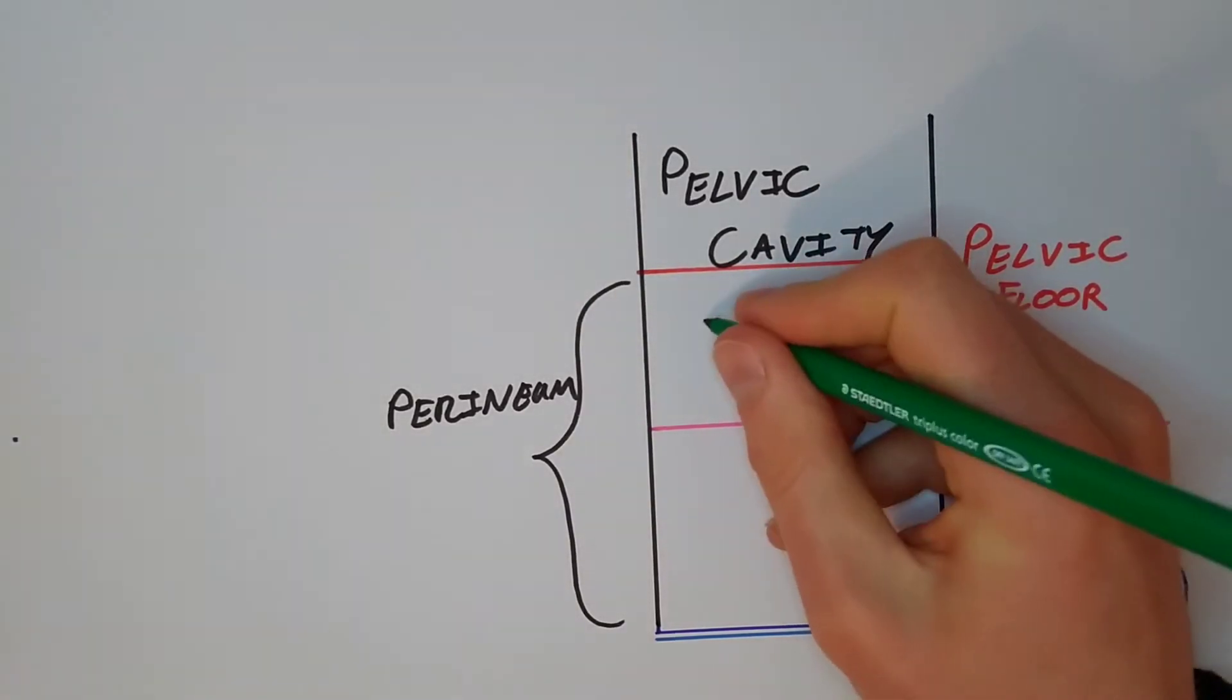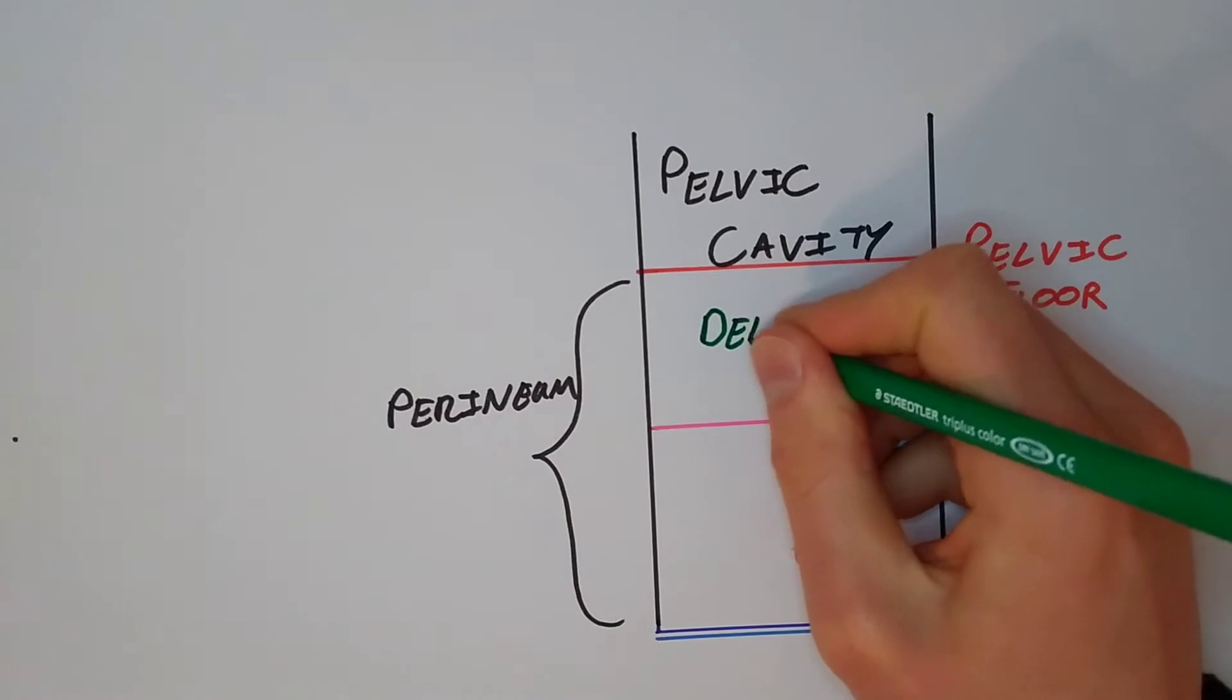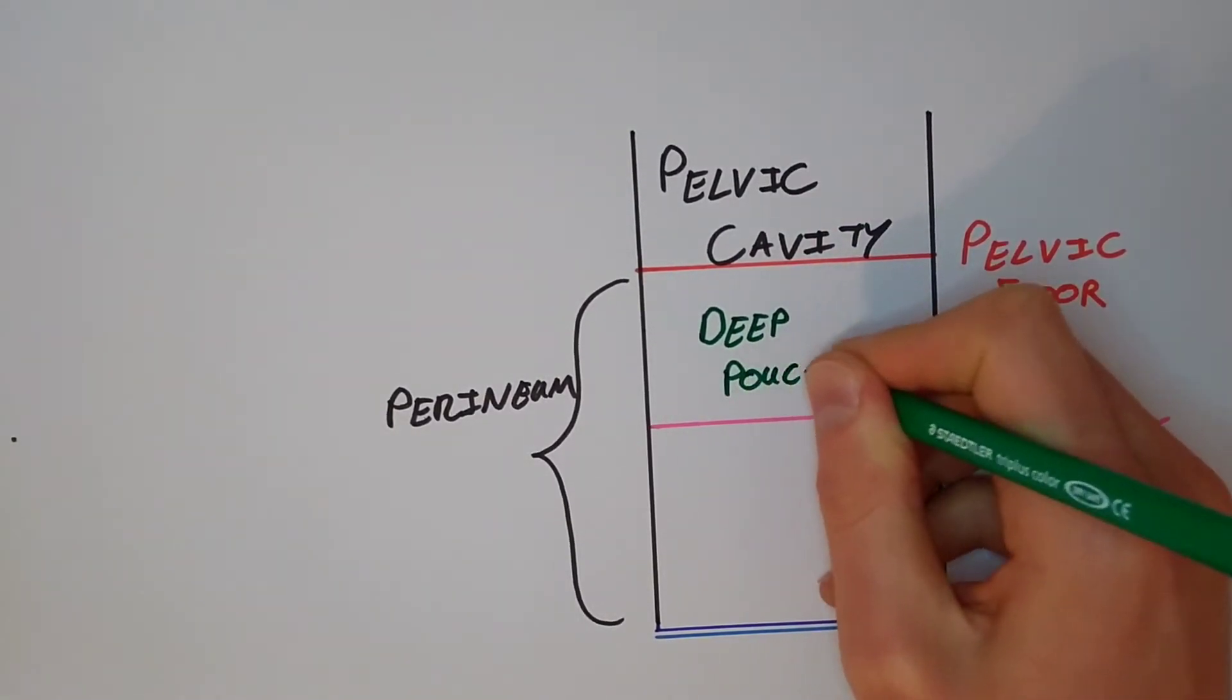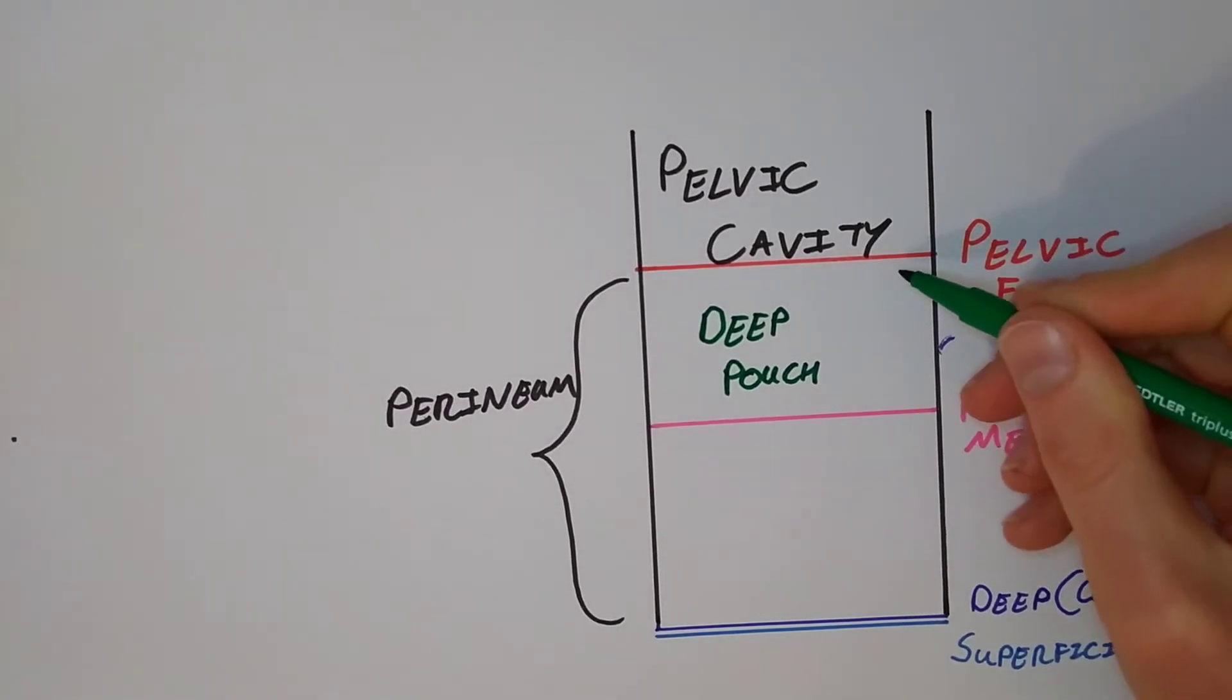The deep pouch is going to contain the deeper transverse perineal muscles. If you ever hear the term urogenital diaphragm, that is referring to the muscles and associated fascia within this pouch.